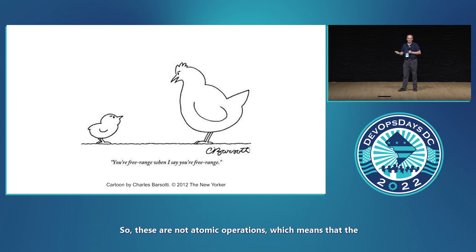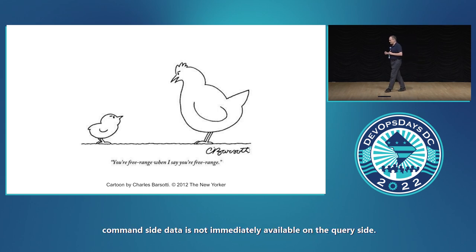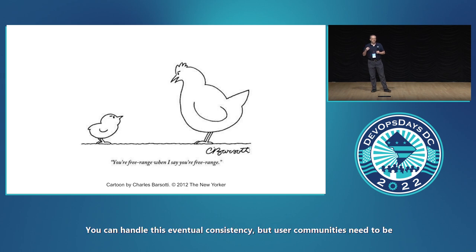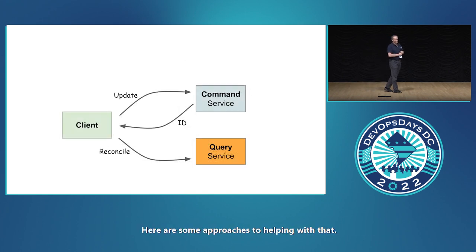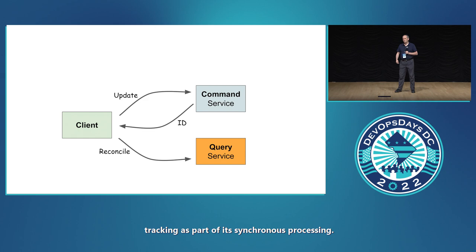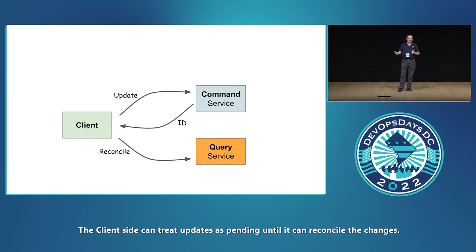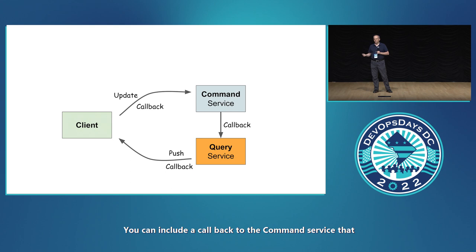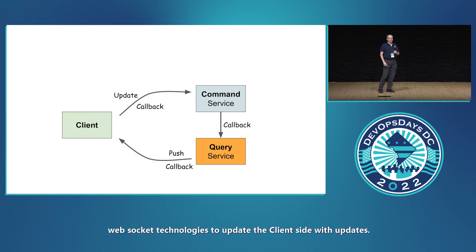These are not atomic operations, which means that the command side data is not immediately available on the query side. You can handle this eventual consistency, but user communities need to be willing to work with a system that is not always completely consistent. Here are some approaches: the command side can issue unique IDs to help with tracking as part of its synchronous processing; the client side can treat updates as pending until it can reconcile the changes; you can include a callback to the command service that gets invoked by the query service when it's done updating; or you can implement something like SignalR or other WebSocket technologies to update the client side.